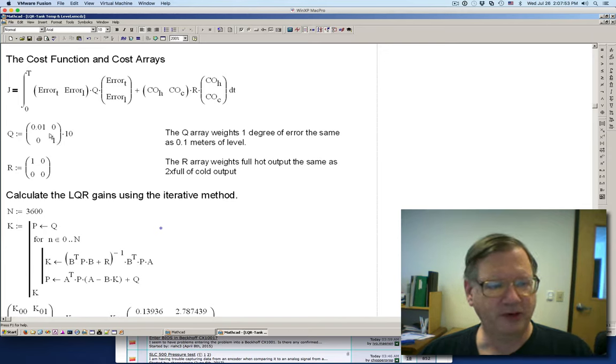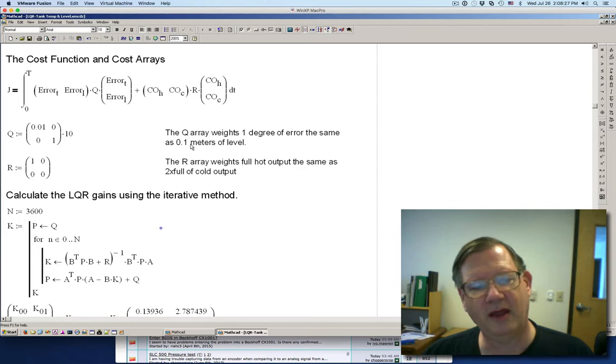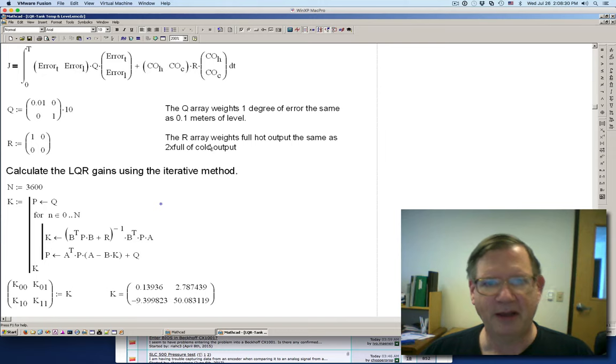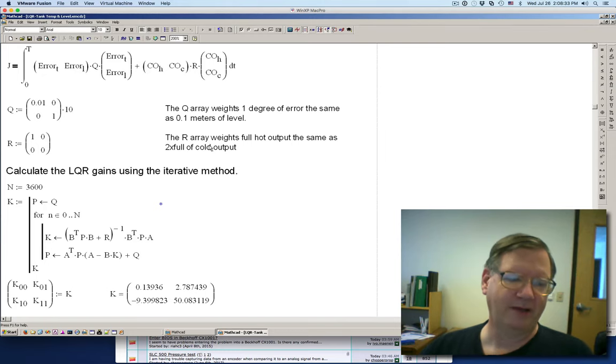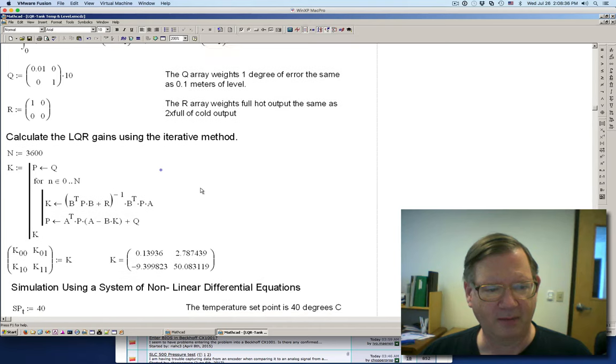And because this is the temperature up here and this is the level, I've got this weighted so that one degree of temperature error is the same as 0.1 meters of level. And the way that you calculate this out is you have to take the ratio of those two values, which is 0 over 1 and then square it. So then what happens is I have a 1 and a 0.01 up here. So that makes it so that one degree of temperature is going to be equal to one tenth of a meter of level. Now it's going to try to hold that, but it won't hold it exactly because of the different interactions.